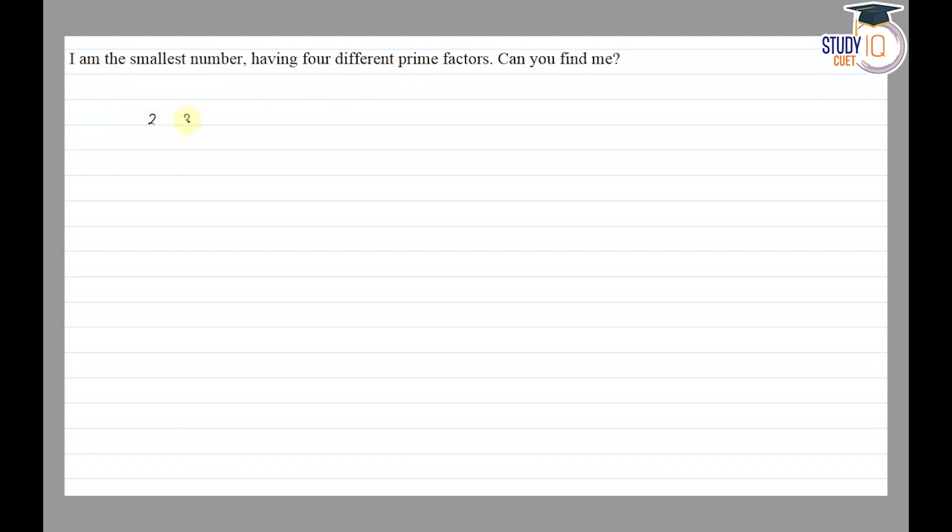So can you find me? To find the number using these prime factors, we use every prime factor one time. So the product is 7 × 5 = 35, × 2 = 70, × 3 = 210. So the number will be 210. Thank you.